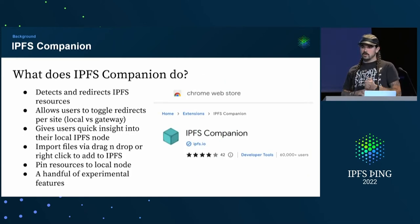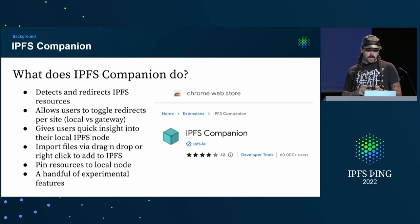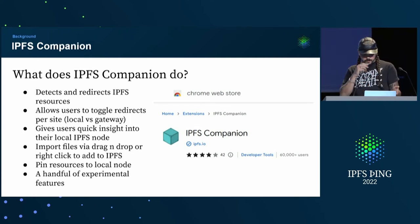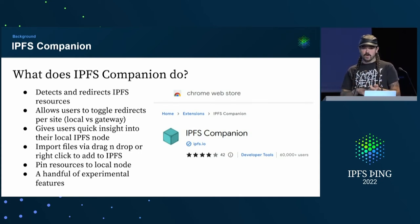You can toggle between local and gateway. Sometimes you want to always have the gateway for certain types of domains, sometimes you prefer local — you can toggle that overall. You can get insights into your local node without actually digging into IPFS Desktop or anything like that. You can see peer counts and things like that. You can pin resources to your local node. And then there's a drag and drop interface for adding files, and there was a right-click to add to IPFS. All useful stuff.